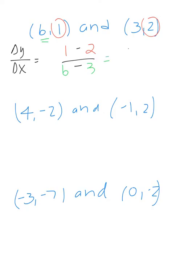I have 1 minus 2 is negative 1. 6 minus 3 is 3. So we have negative 1 third. If you reverse these and you did 2 minus 1 and 3 minus 6, you're going to end up with 1 over negative 3. Negative 1 over 3 is the same as 1 over negative 3.